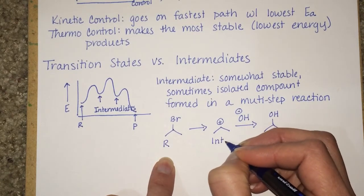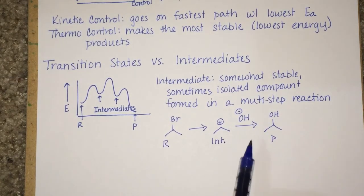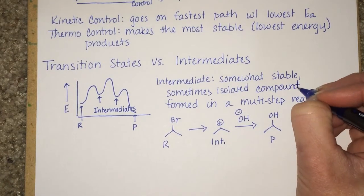So this is our reactant. This is our product. This would be an intermediate. Somewhat stable, sometimes isolatable, formed in the middle between reactants and products.